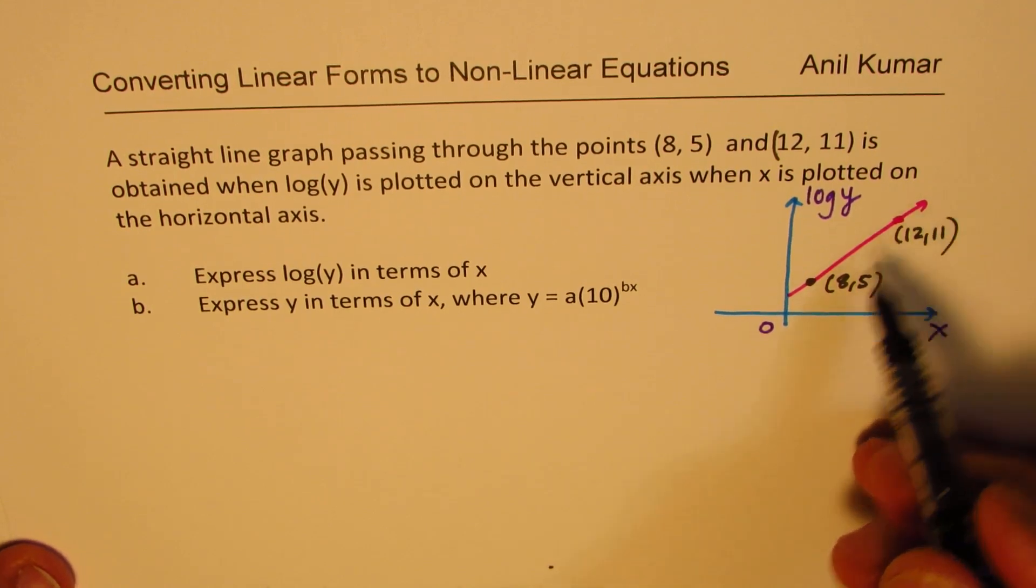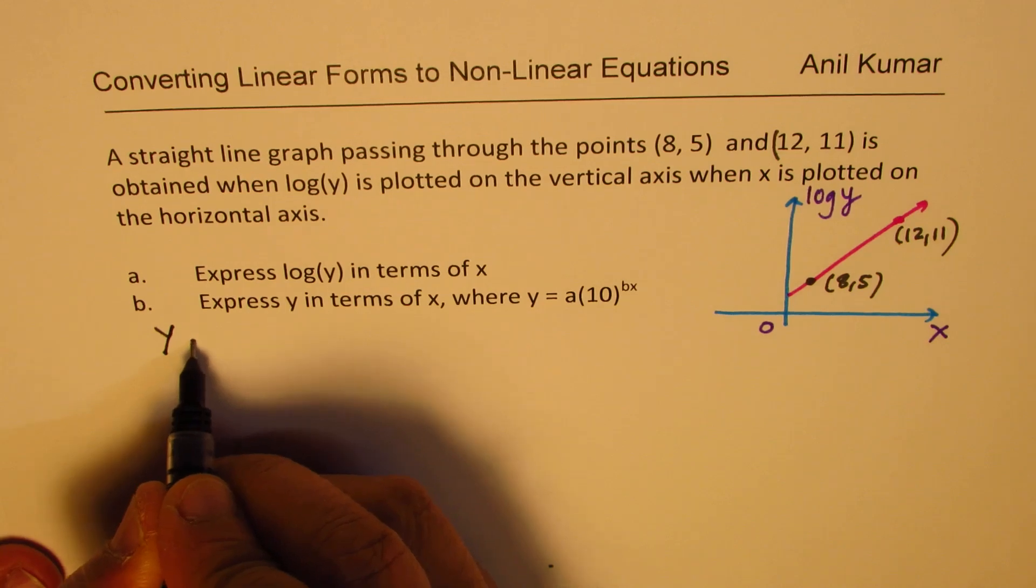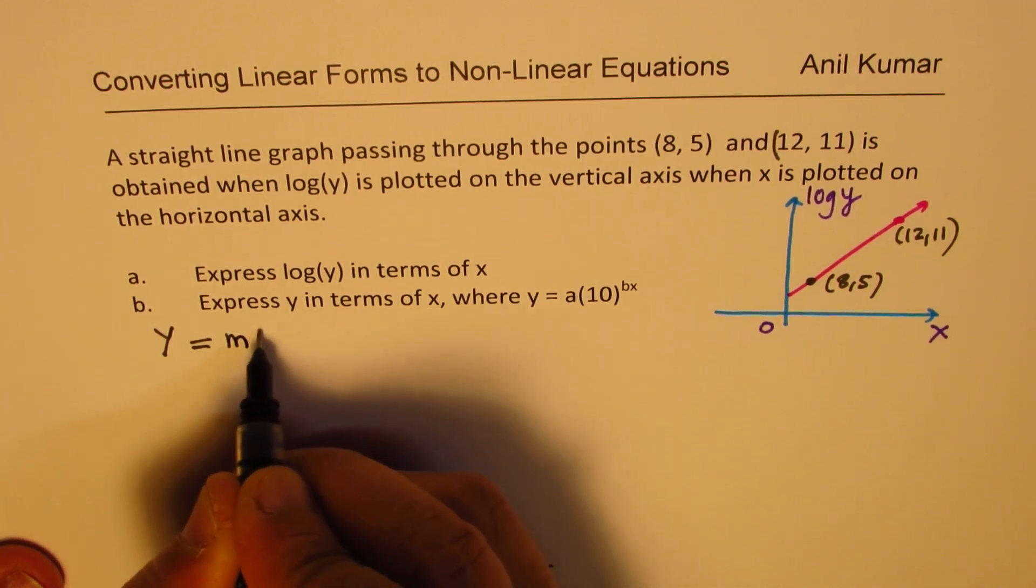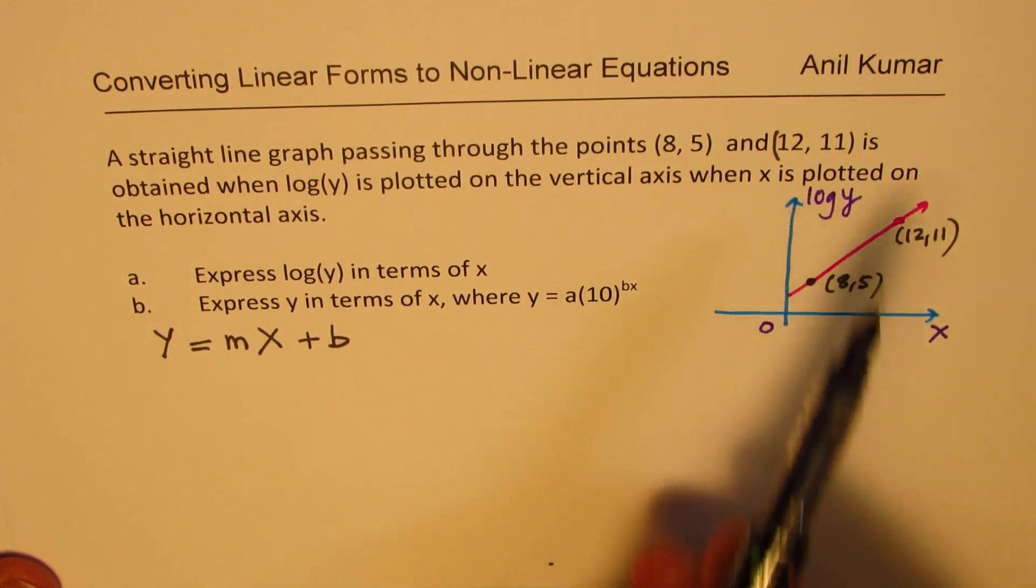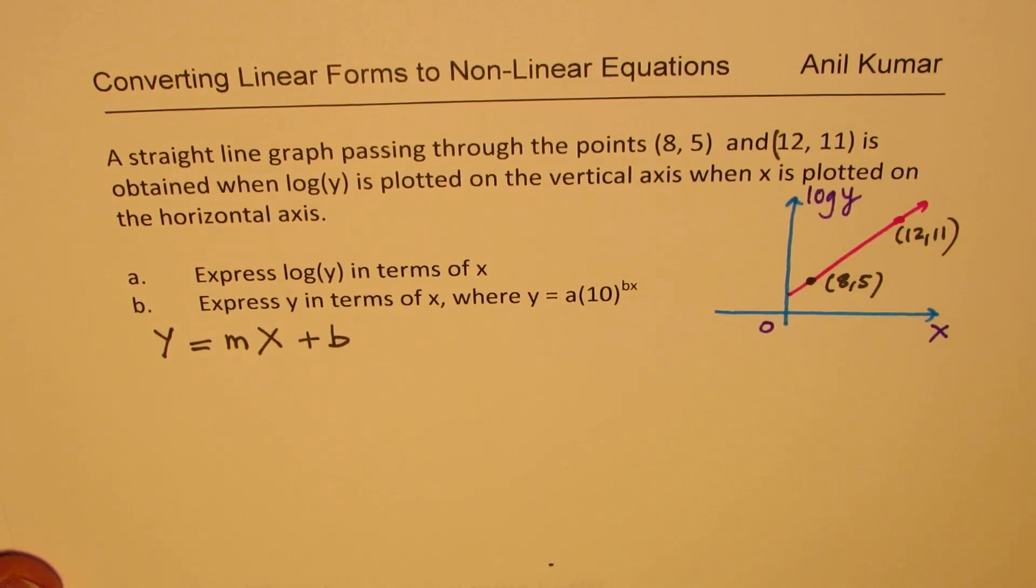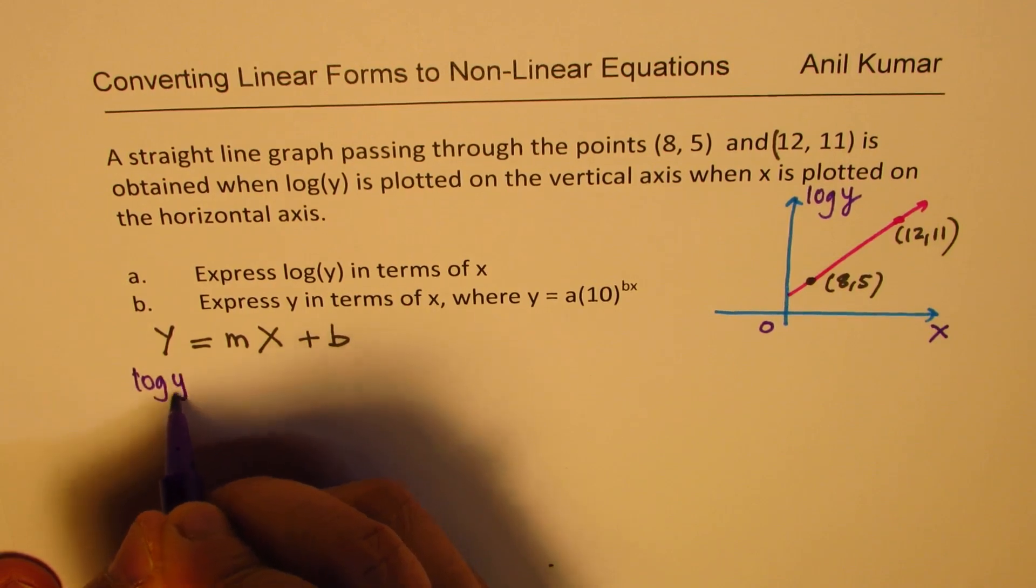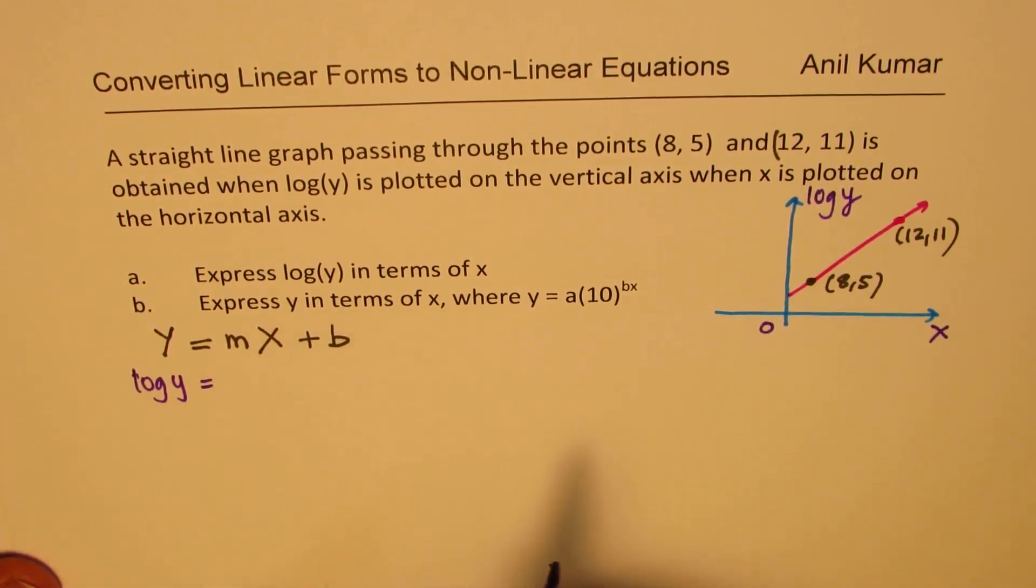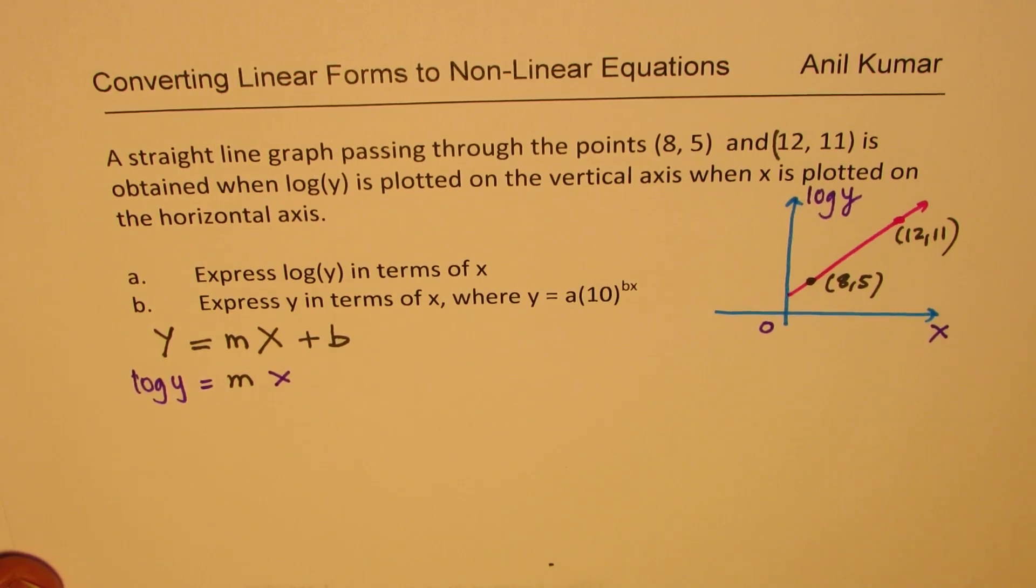Now since we have a line here, we could always write this line in the form of y equals mx plus b. This value y is given to us as log of y. So log of y equals m, and x is same as x here, plus b.